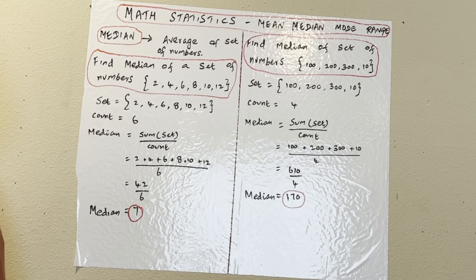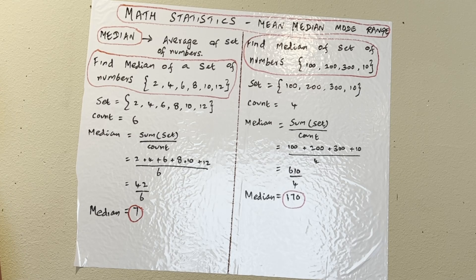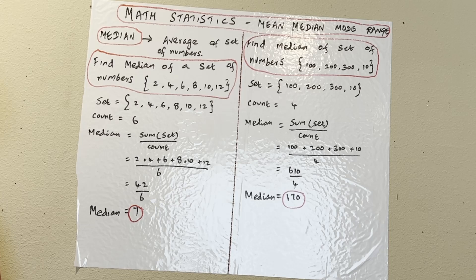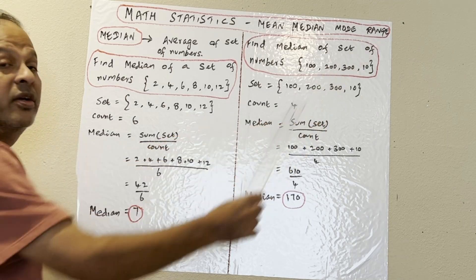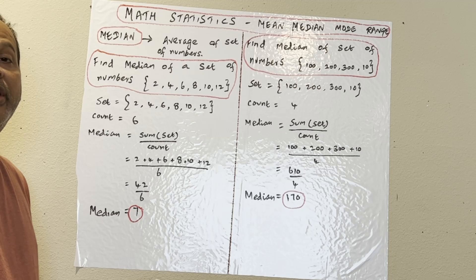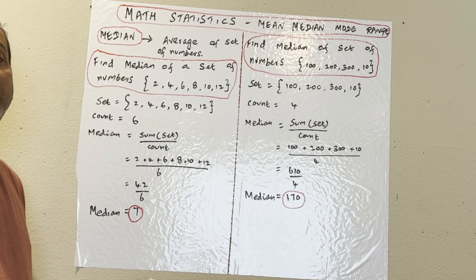Hi guys, good morning. Today we're going to talk about another topic in math — it's about statistics, which we use in everyday life. We'll talk about how to find the average mean, median of a set of numbers. Also we'll learn about the mode, how to find the mode of a set of numbers, and how to find the range and standard deviation of a set of numbers. Let's start with the basic mean.